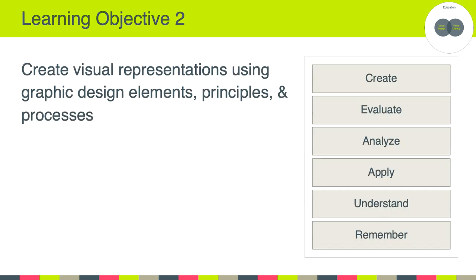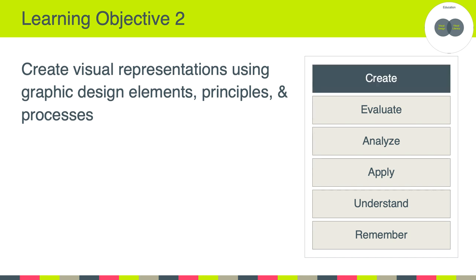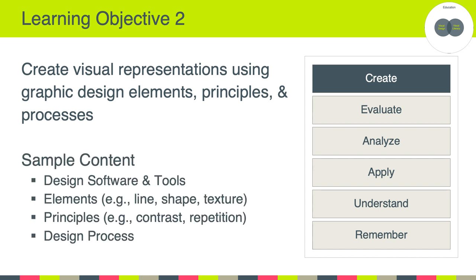Our second learning objective states that we're going to create visual representations using graphic design elements, principles, and processes — notice the emphasis on the create aspect of Bloom's taxonomy. Content related to this objective includes learning to use design software and tools, learning about different design elements such as line, shape, and texture, different design principles such as contrast and repetition, and spending considerable time learning about the process of design and how to iterate through a design project from beginning to end.